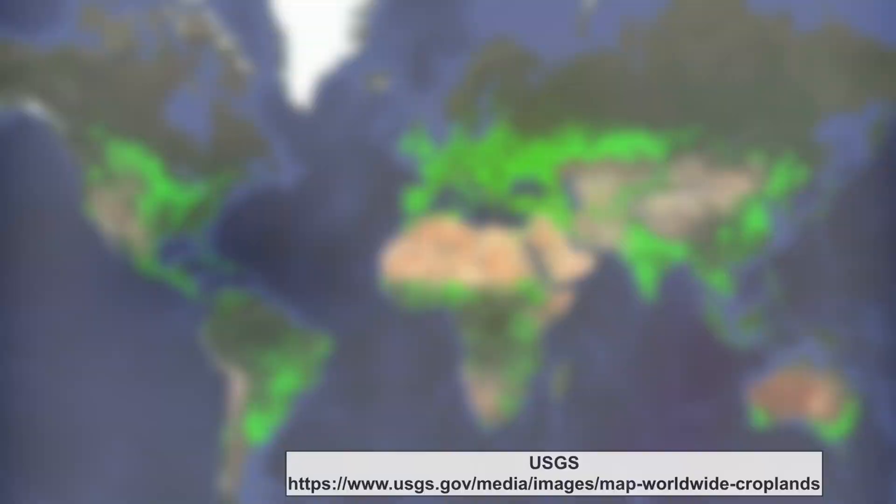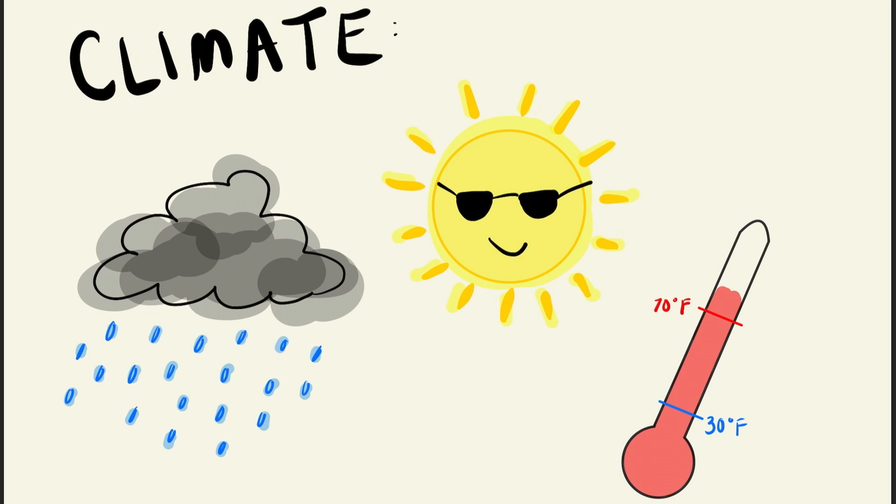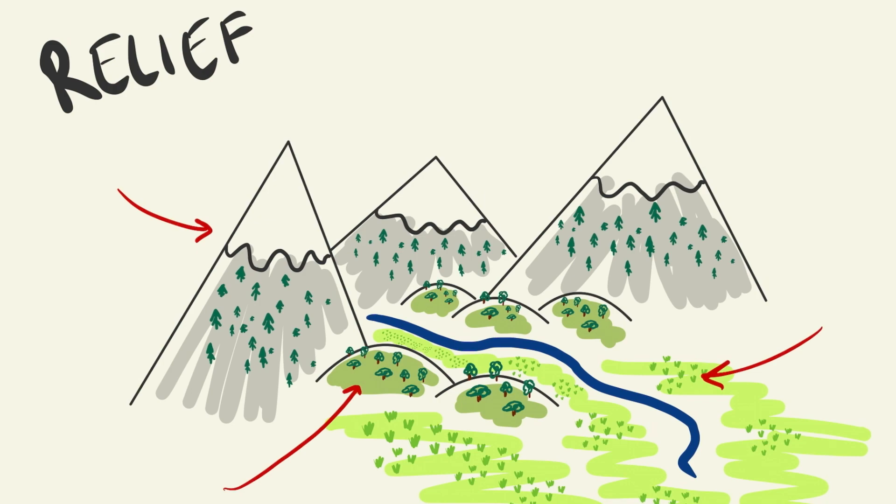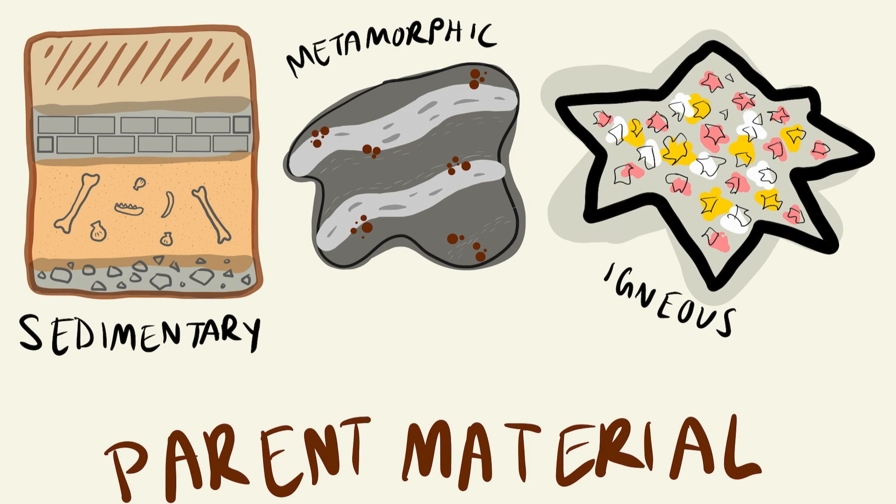The ratios and types of these components change depending on the soil's location and the region's climate, relief or topography, organisms, parent material, and time — and how long the soil has existed.